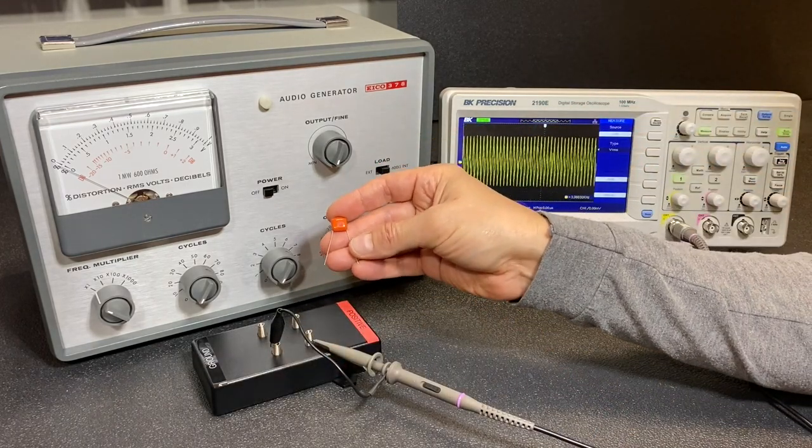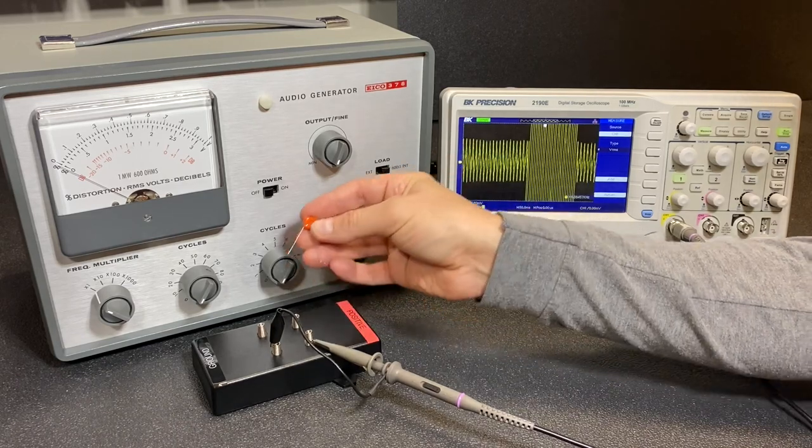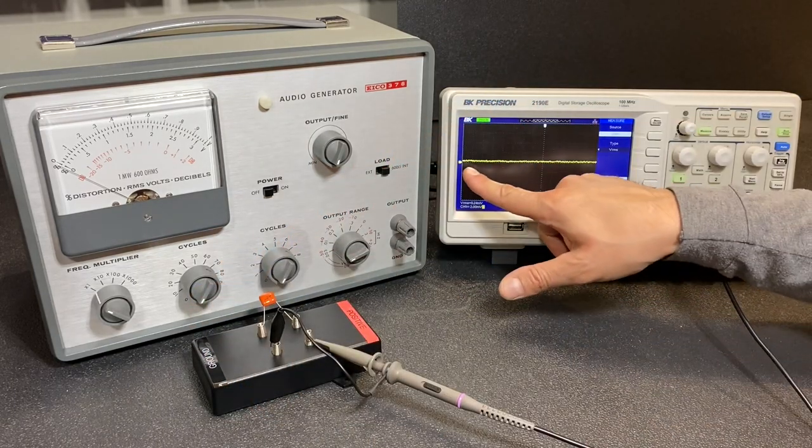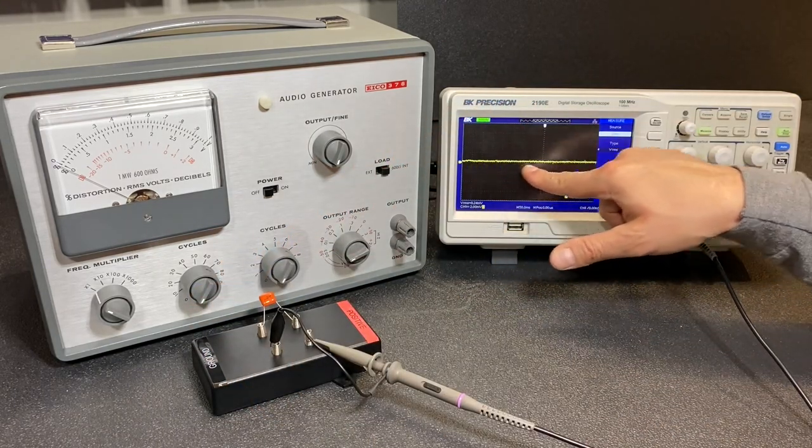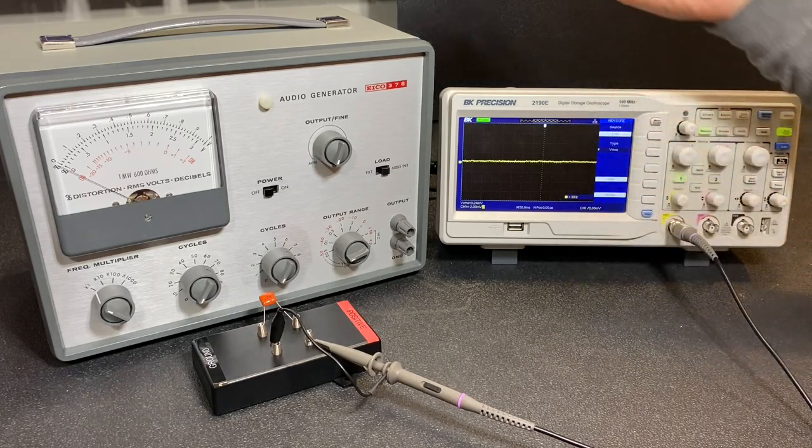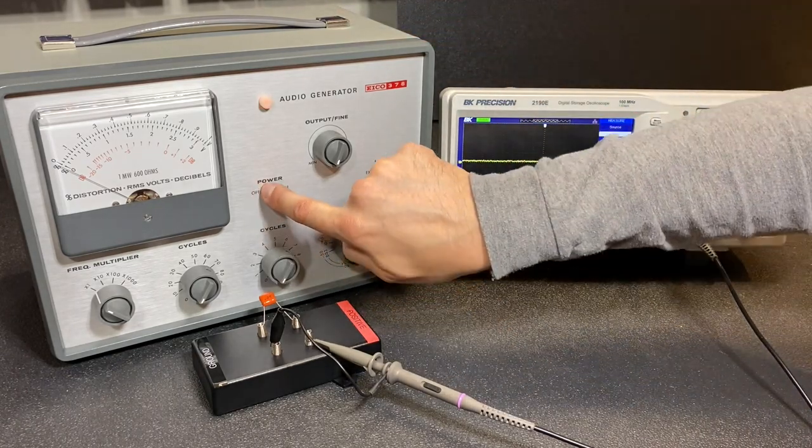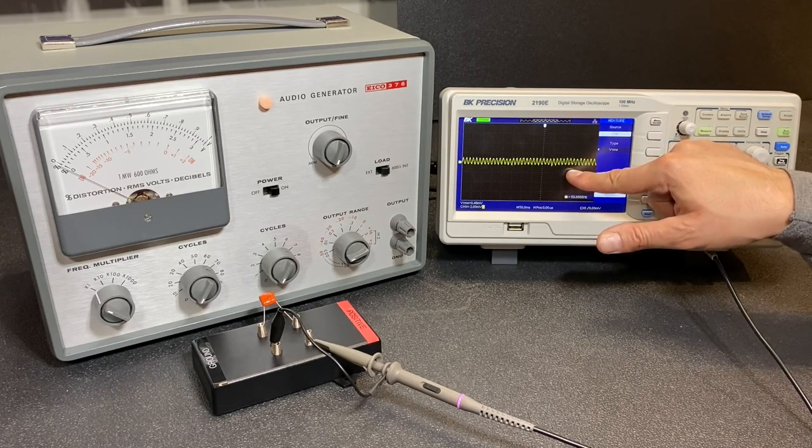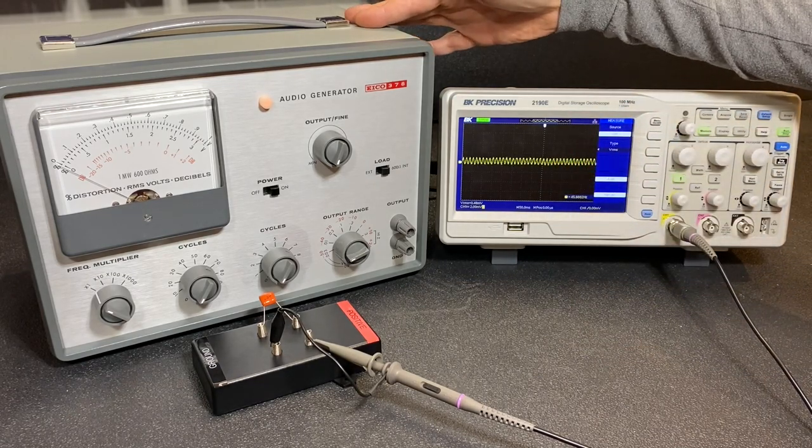Let's measure one of our 0.04 microfarad capacitors first. Put it in our tester. And we can see on the oscilloscope we're getting some random noise here. Now watch what happens when I turn on the audio generator. And you can see now that the capacitor is now picking up the 60Hz noise signal coming from the audio generator.